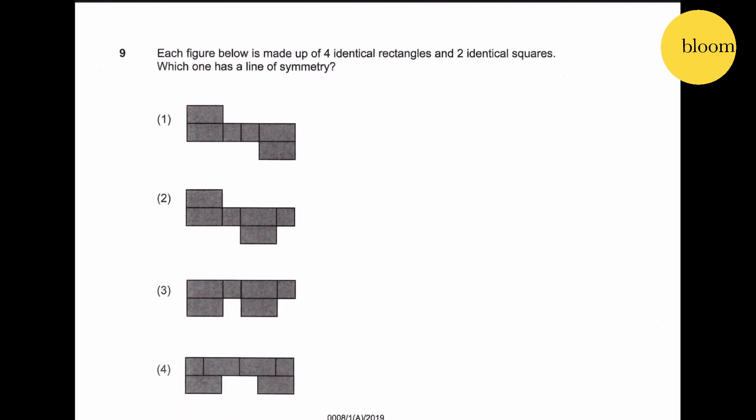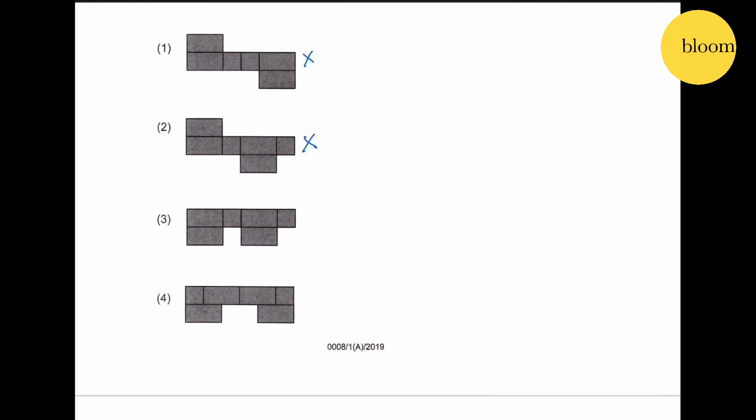Number 9: each figure below is made up of 4 identical rectangles and 2 identical squares. Which one has a line of symmetry? This one, no, you can't have this as well. Neither is this, neither is this, and we know this is the answer.